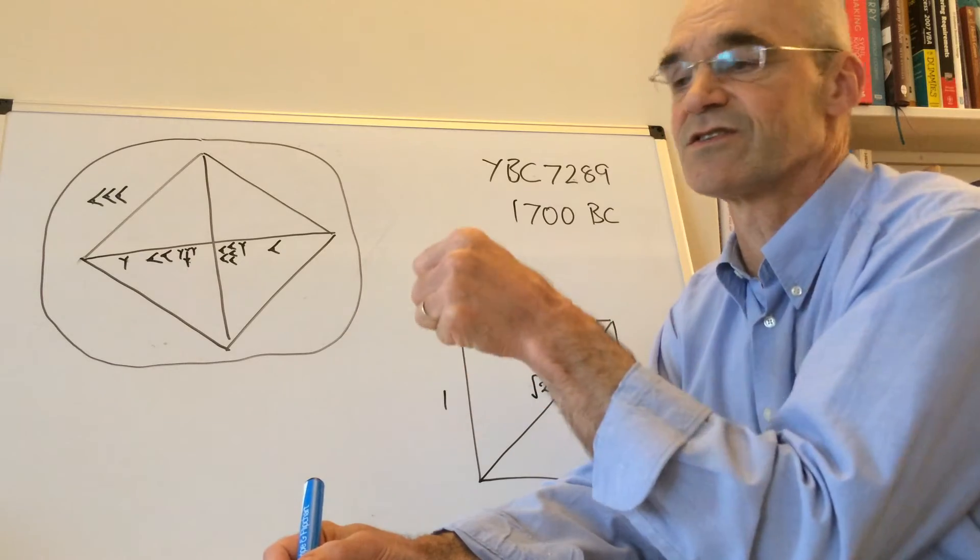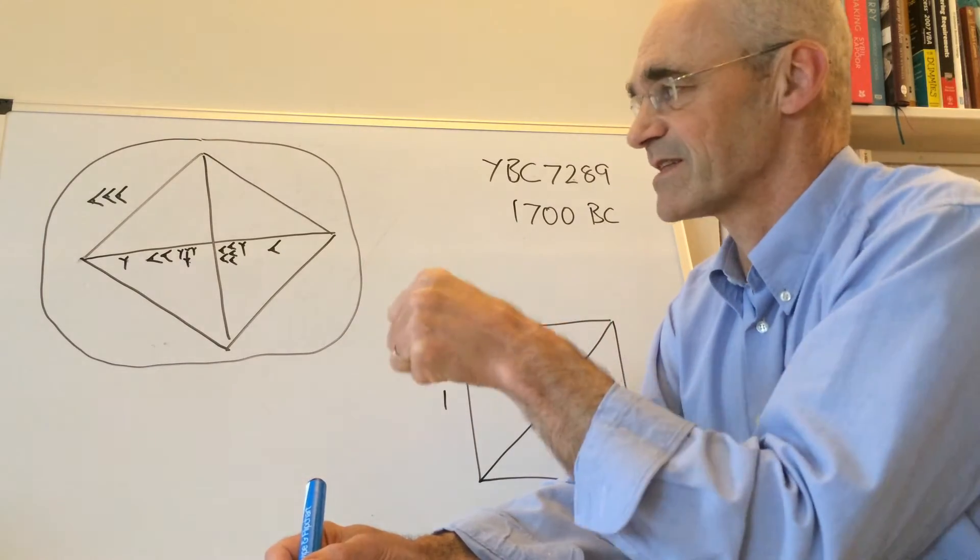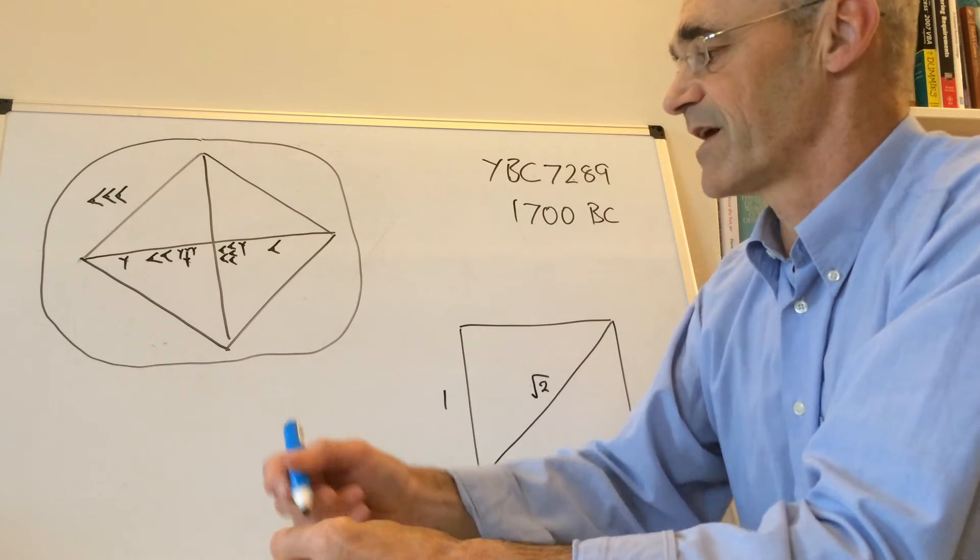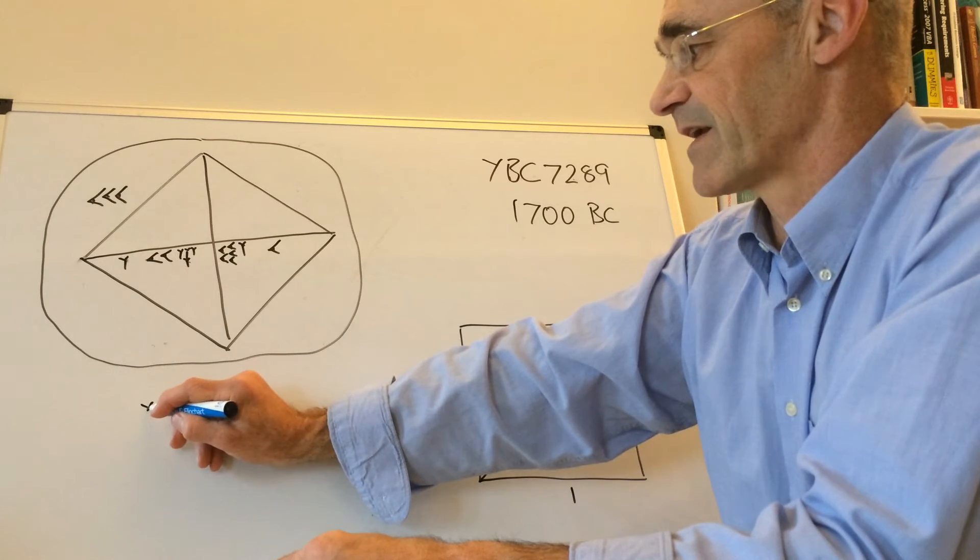They would press a stylus into the clay. I think it had two ends or two slightly different forms to it so that they could mark their units like this.